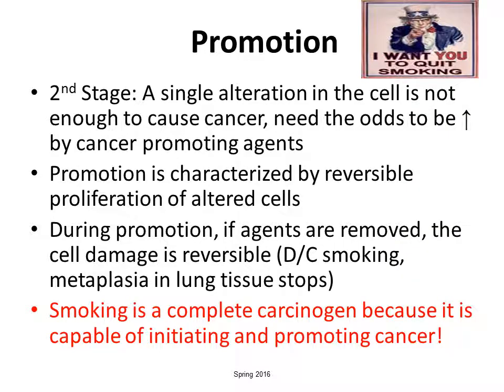The next stage is promotion. A single alteration in a cell is not enough to cause cancer — you need the odds increased by other promoting agents. Promotion is characterized by the reversible proliferation of altered cells. The perfect example is smoking: it promotes cellular damage and also promotes extension of that damage. If you quit smoking, that process stops and the lung, for example, can begin to heal itself. Smoking is a complete carcinogen because it's capable of both initiating and promoting cancer.